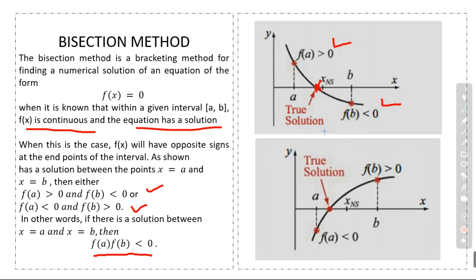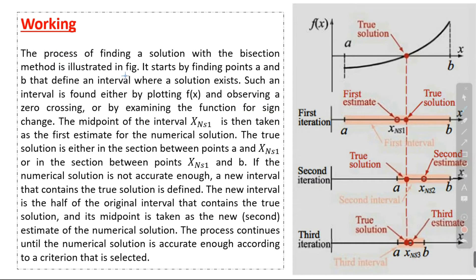The process of finding a solution with the bisection method is illustrated in the figure. It starts by finding points a and b that define an interval where a solution exists. Such an interval is found either by plotting f(x) and observing a zero crossing, or by examining the function for a sign change. The midpoint of the interval, x1 (numerical solution one), is taken as the first estimate.